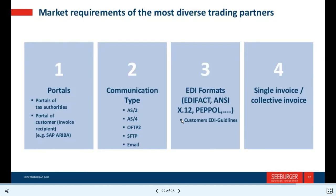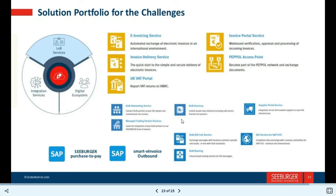The sixth stumbling block is market demand from trading partners. Channels include: tax authority portals, customer invoice receiver portals, and SAP systems. Communication paths include AS2, AS4, SFTP, and FTP. EDI formats commonly used include EDIFACT and X12, plus customer-specific EDI. Invoice types include single invoice and collective invoice. These represent the main solutions to the challenges.